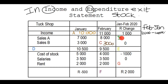Now we look for B: the amount of change between Sales A in January and February. That's easy — 8,000 minus 7,000 gives us 1,000 rand change. Then for Sales B, we sold 3,000 rand worth of stock in January and the same in February, so there's zero rand change.